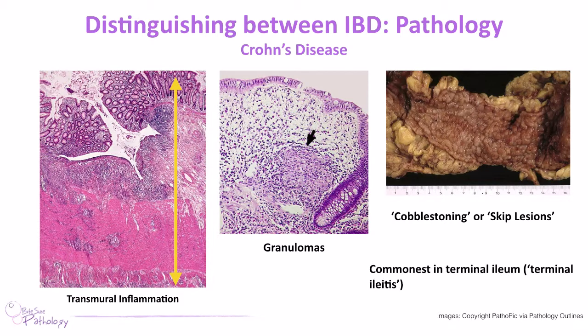The commonest site for Crohn's disease is actually the terminal ileum — we talk about terminal ileitis — and the ileocaecal area is really important. With this level of inflammation burrowing through the bowel wall, it can lead to fibrotic reactions and inflammatory strictures, which can cause bowel obstruction as a presentation of Crohn's disease. You can also get fistulas forming — connections between two body cavities that shouldn't be there — because the inflammation is burrowing through. Fistulas and strictures are two important complications of Crohn's disease.